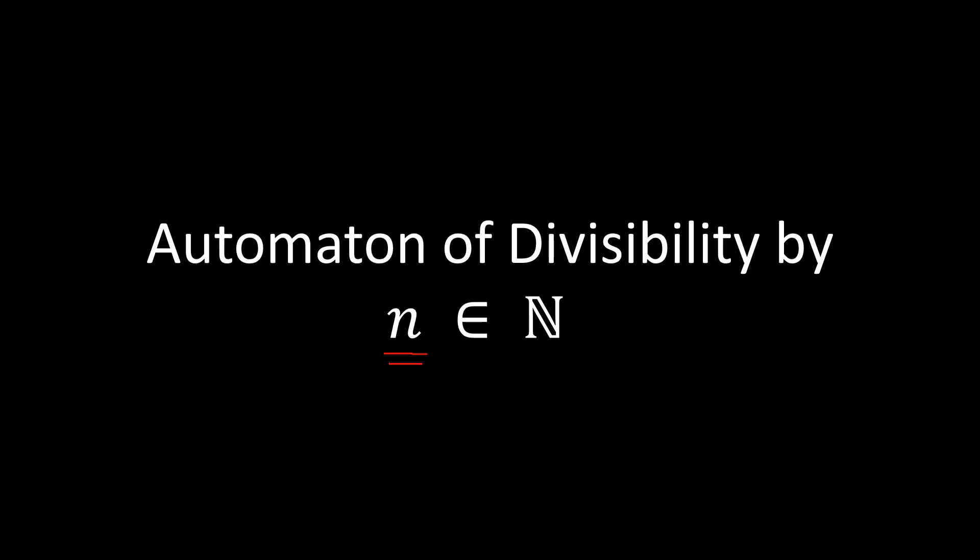Hello and welcome again to another video on number theory. Today we'll talk about how to check for divisibility graphically, and that's what the automaton of divisibility by n is for. Here n is a natural number bigger than 3.